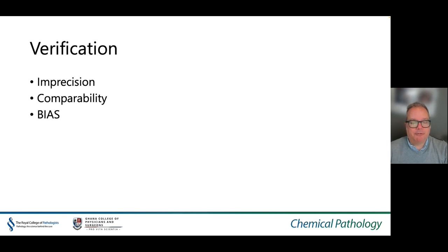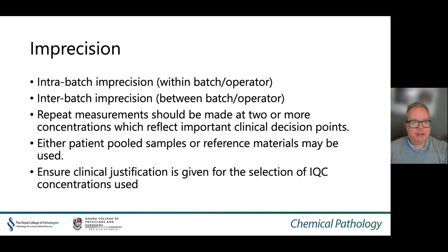In terms of the minimum required for a verification, imprecision, comparability, and assessment of bias should be performed. Imprecision includes intrabatch imprecision (within-batch) and interbatch imprecision (between-batch), both of which can be measured and determined. Repeat measurements should be made at two or more concentrations which reflect clinically important decision points, using patient pooled samples or reference materials. Clinical justification is required for the selection of IQC concentrations, which are usually around important decision points with the method.